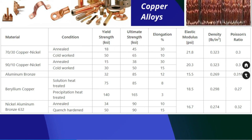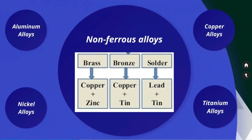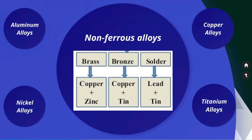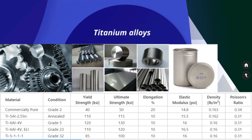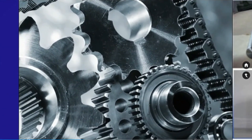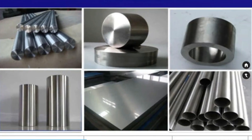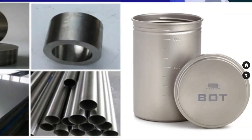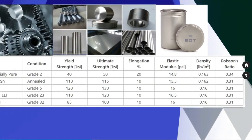Titanium alloys are light, strong, and have high corrosion resistance. Their density is much lower than steel and the strength-to-weight ratio is excellent. For this reason, titanium alloys are widely used in the aerospace industry. The table shows mechanical properties of several common titanium alloys.